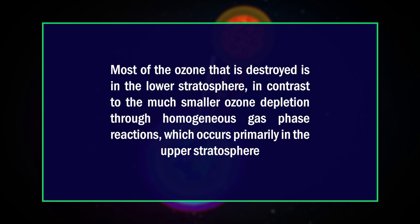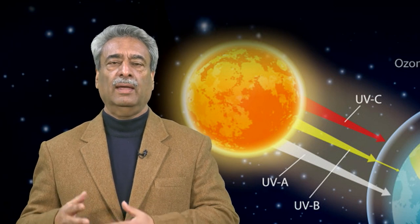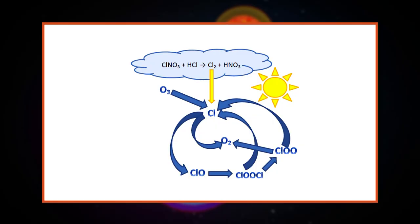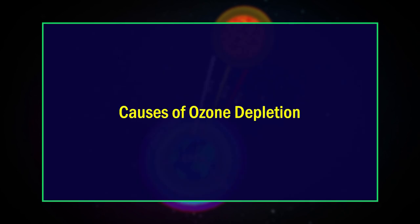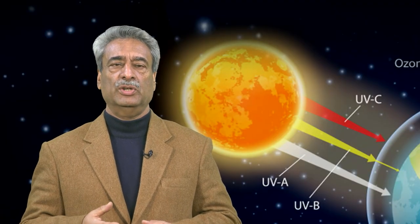As warm, ozone- and nitrogen dioxide-rich air flows in from lower latitudes, the PSCs are destroyed, the enhanced ozone depletion process shuts down, and the ozone hole closes. Most of the ozone that is destroyed is in the lower stratosphere, in contrast to the much smaller ozone depletion through homogeneous gas-phase reactions which occur primarily in the upper stratosphere. So far we have learned that CFC molecules can destroy about 100,000 ozone molecules before being destroyed themselves.